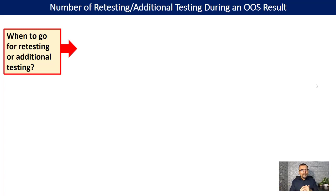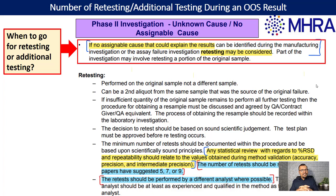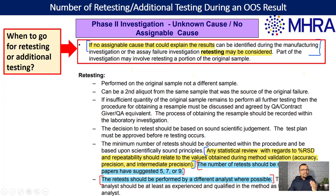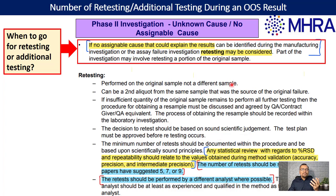How long are you going to keep investigating the root cause? The very important question you need to ask is when to go for additional or retesting. Taking reference from a UK MHRA presentation, additional testing or retesting can be conducted if no assignable cause that could explain the results can be identified during the manufacturing investigation or the assay failure investigation.